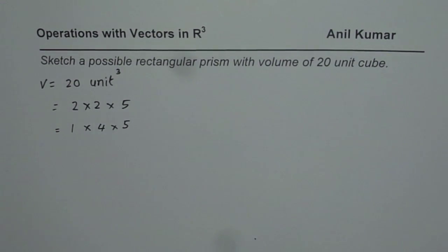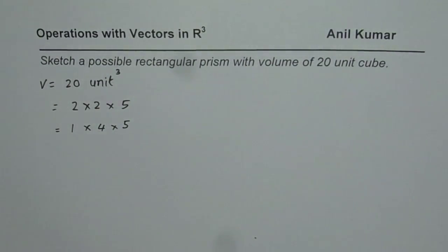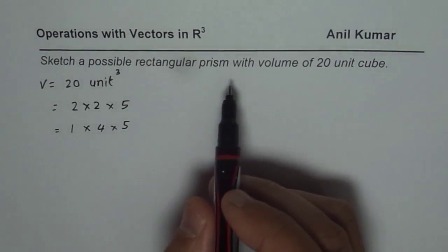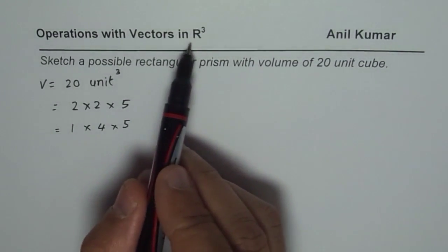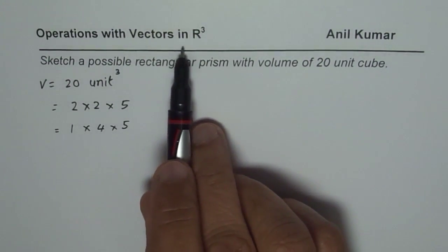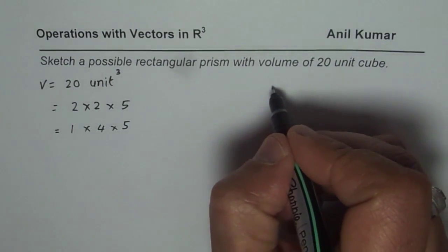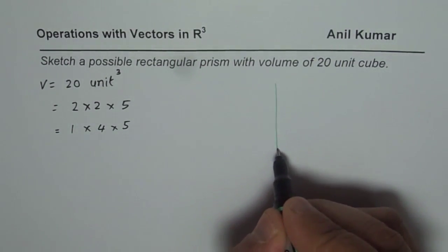We'll use one of these dimensions to sketch a rectangular prism. The whole idea here is not just to represent a rectangular prism, but also to write down the vectors representing each side, because we are talking about operations with vectors in R3. So this question belongs to the topic of sketching vectors in R3.